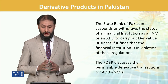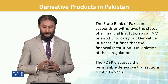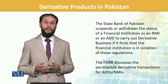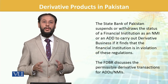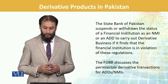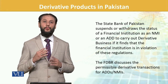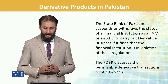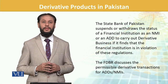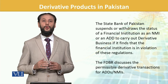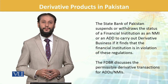The State Bank of Pakistan can suspend or withdraw the status of financial institutions as NMI or ADD to carry derivative business if it finds the institution is in violation of these regulations. This is a very critical area which the regulator closely watches. The Financial Derivative Business Regulations (FDBR) discuss permissible derivative transactions for ADDs. The State Bank division which handles these regulations monitors all approvals and permissions specifically for derivatives.